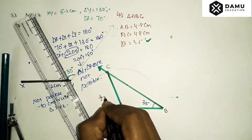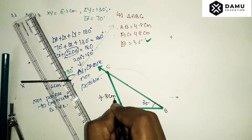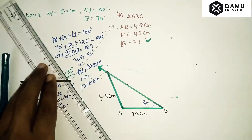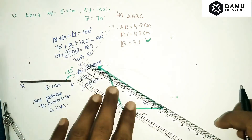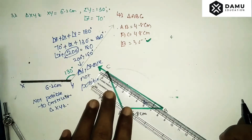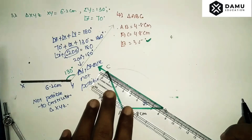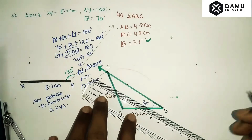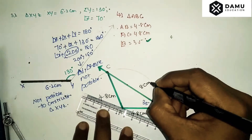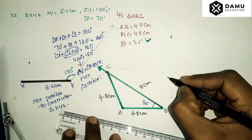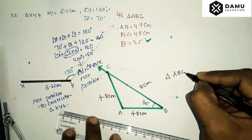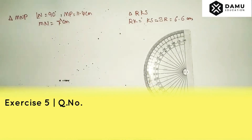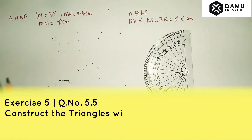Join AC. So the measurements are: AC equals 4.8 centimeters, and BC will be around 8.1 centimeters. Triangle ABC is now constructed.